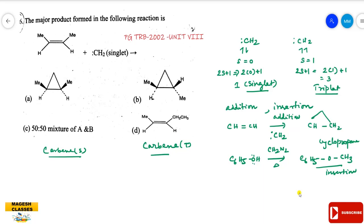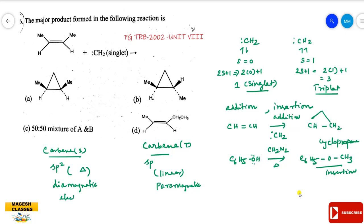Now let us look at the two structures of carbene. The singlet carbene has a trigonal bipyramidal-like structure where the two electrons are in opposite spin — it is diamagnetic. The triplet carbene has electrons with the same spin, making it paramagnetic. The triplet carbene behaves like a free radical mechanism.